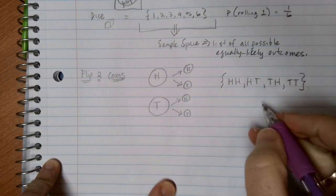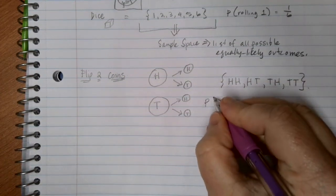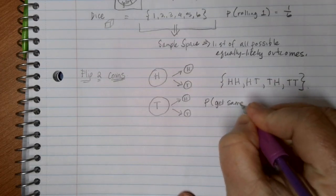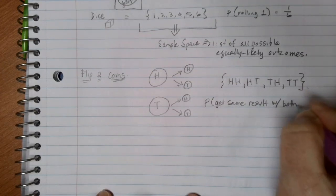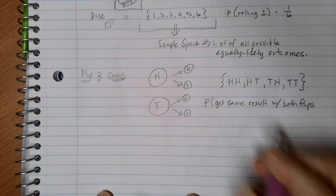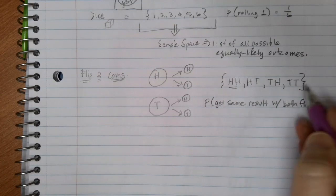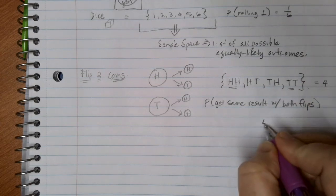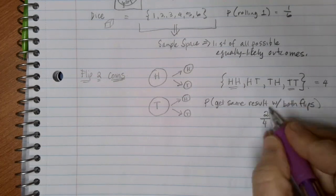This allows us to do slightly more interesting probabilities. Let's say I wanted to find the probability that I get the same result with both flips. I can look up here, and there's two ways that this could happen. I could get heads over heads, or I could get tails and then tails. There's four equally likely options. So four is the bottom of my denominator, and two ways that that could happen.